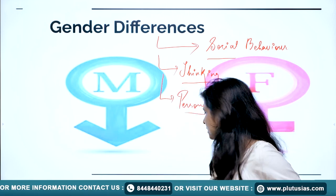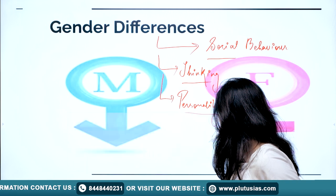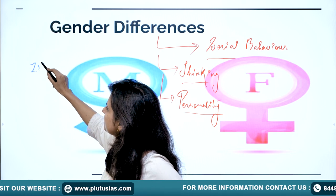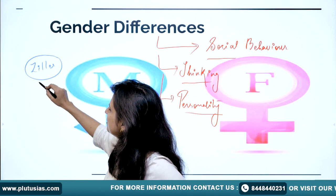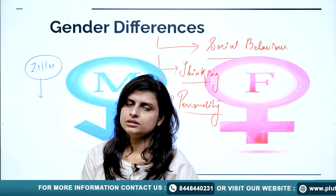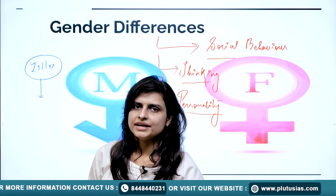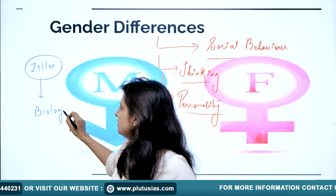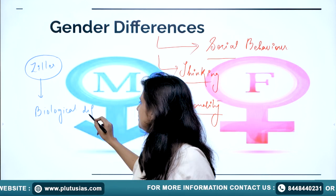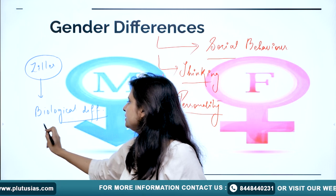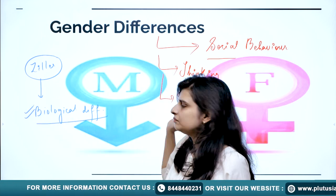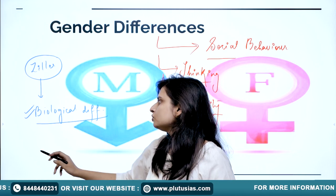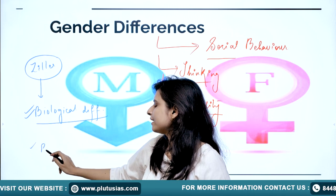According to Ziller, this psychologist was very much accepting of the fact that biological differences between both genders — male and female — are very much evident. However, there are other differences also which are based on the aspects of psychology.